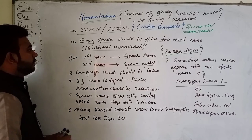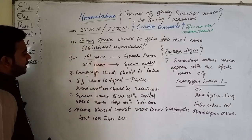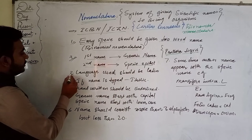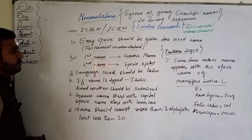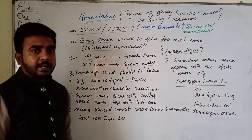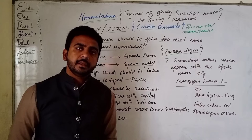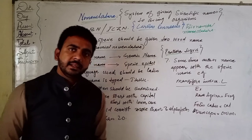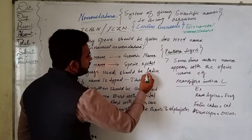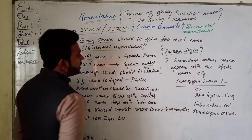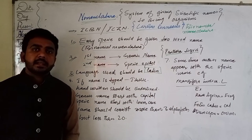The third rule of binomial nomenclature is that the language used should be Latin. We use Latin because it is a dead language, which ensures stability and universality in scientific naming.